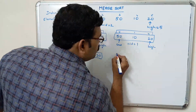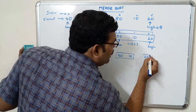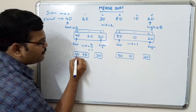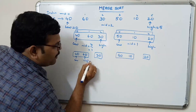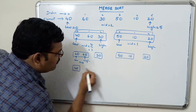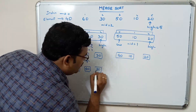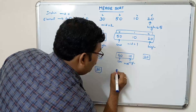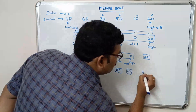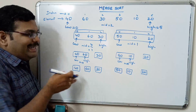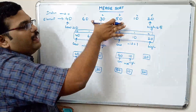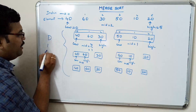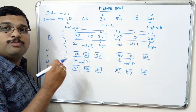Repeating the same procedure: 40 and 60 are split into one part each, and 30 is already a single element. Similarly, 50 and 10 are separated into individual elements, and 20 is already individual. At this step we have divided all the complete elements into individual elements. This entire process is the divide part — we have divided the complex problem into small problems.